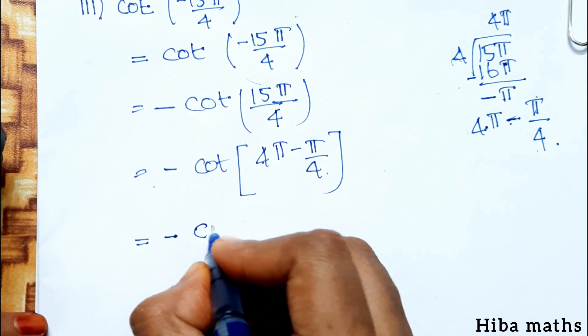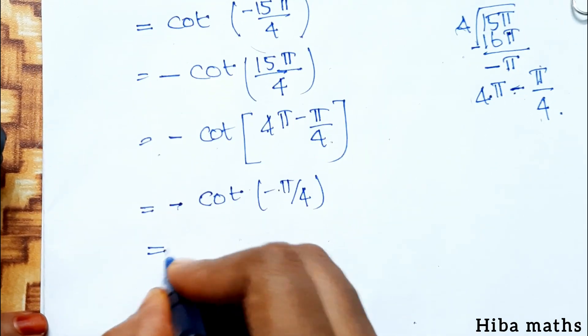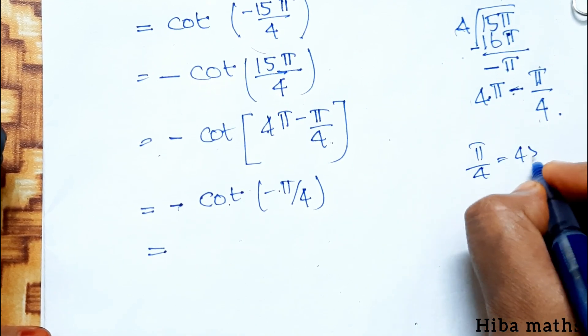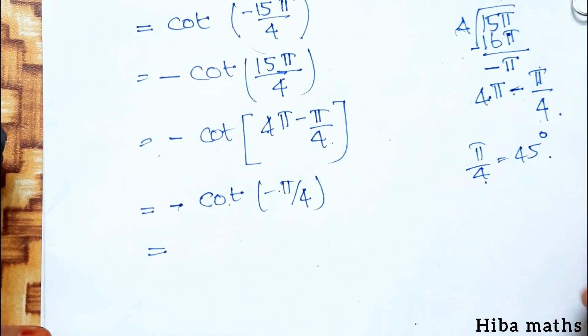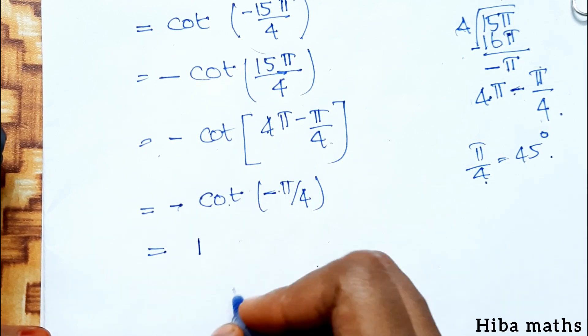This becomes minus cot minus pi by 4. Minus times minus gives plus cot pi by 4.